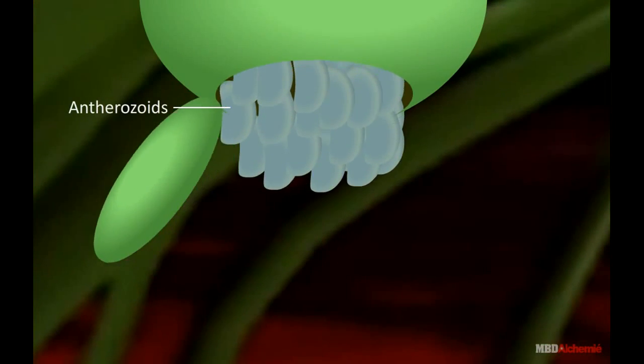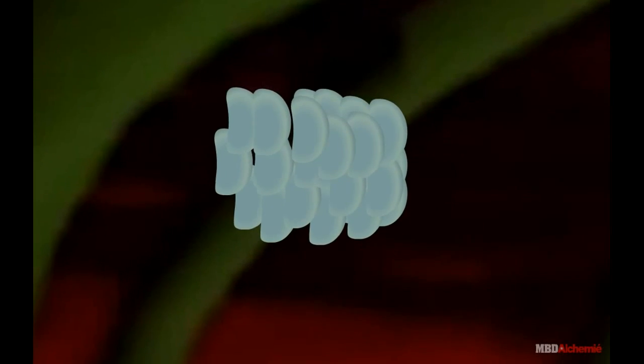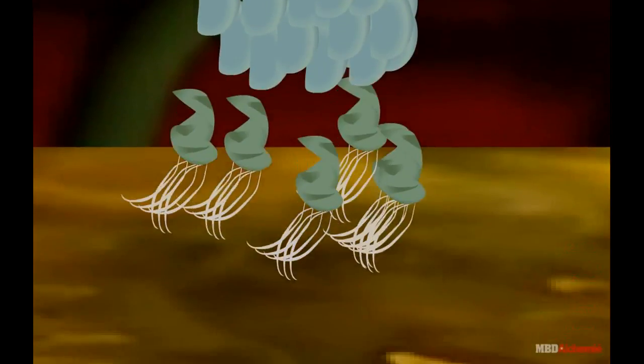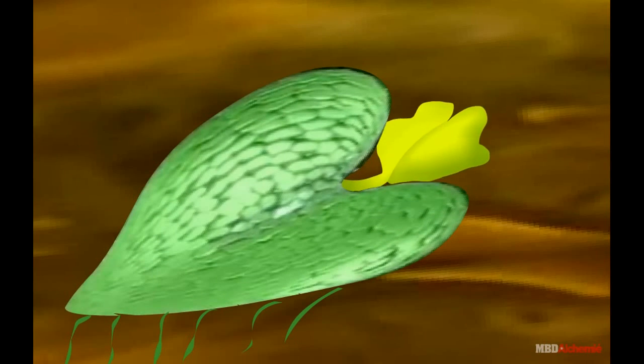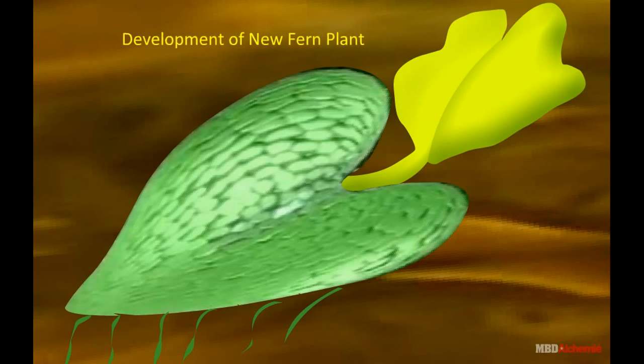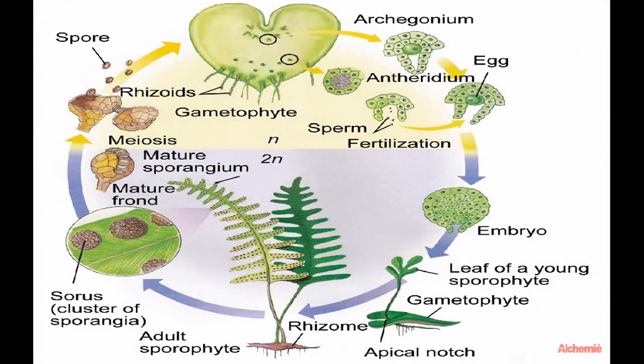Antherozoids swim in water by their cilia. One of the sperm fuses with the egg to form a zygote. It covers itself with a cell wall and is called oospore. The oospore divides and redivides to form the embryo. However, with the development of green leaf and root, and with the decay of the prothallus, the sporophyte develops into an independent plant body.